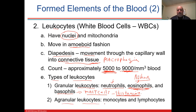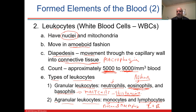Then you have the agranular cells without granules — whenever you see an 'a' prefix it means it's not there, like anuclear meaning no nucleus. You have monocytes and lymphocytes. The monocyte becomes the macrophage — the big eater. Lymphocytes are your T and B lymphocytes. T comes from thymus, and B may come from the bursa found in birds. T and B lymphocytes like to attack viruses and cancers.